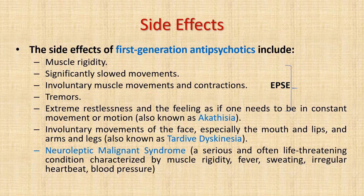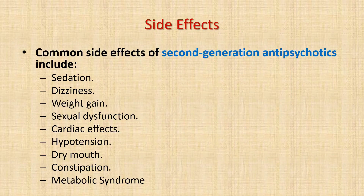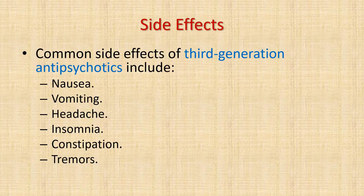For first-generation antipsychotics, patients can develop muscle rigidity, significant slow movement, involuntary muscle movements and contractions, and tremors — collectively known as extrapyramidal symptoms — as well as akathisia and tardive dyskinesia with long-term therapy. Neuroleptic malignant syndrome is a serious and potentially fatal side effect characterized by muscle rigidity, high-grade fever, sweating, and autonomic instability. For second-generation antipsychotics, the side effect profile is more subtle: sedation, dizziness, weight gain, sexual dysfunction, cardiac effects, hypotension, dry mouth, constipation, and metabolic syndrome. Third-generation antipsychotics are safer, with milder side effects such as nausea, vomiting, headache, insomnia, constipation, and tremors.